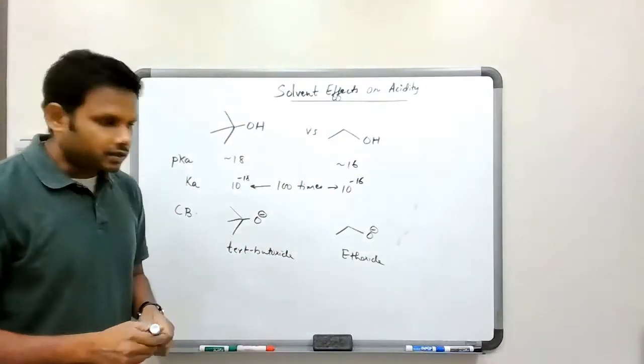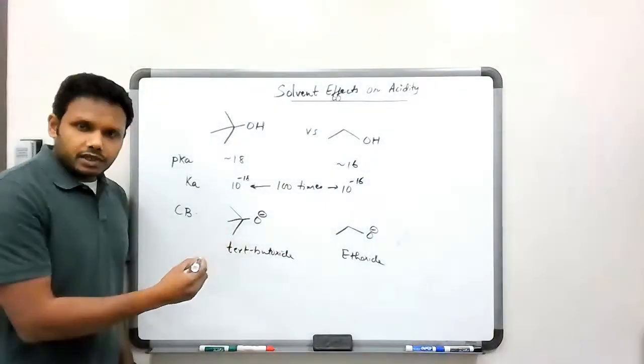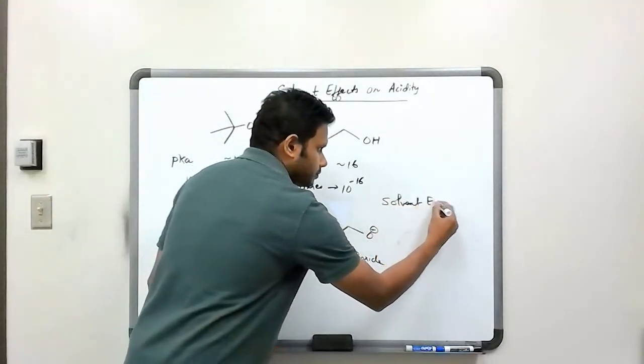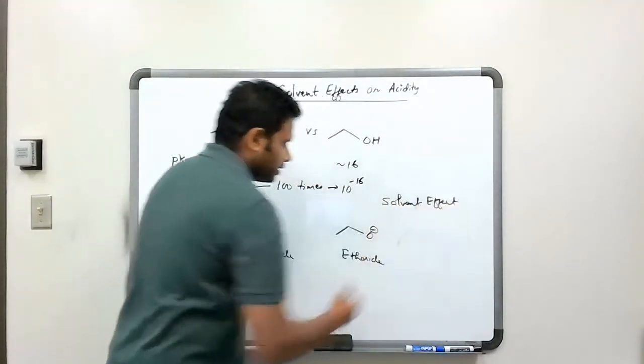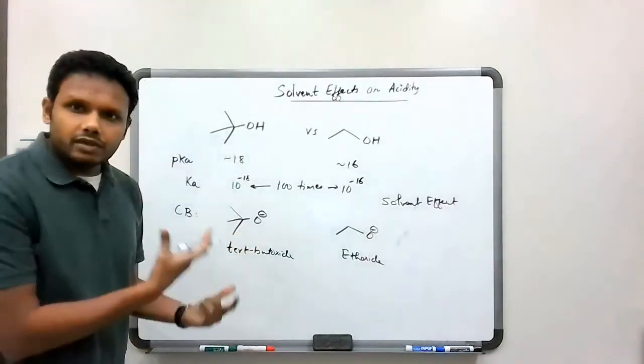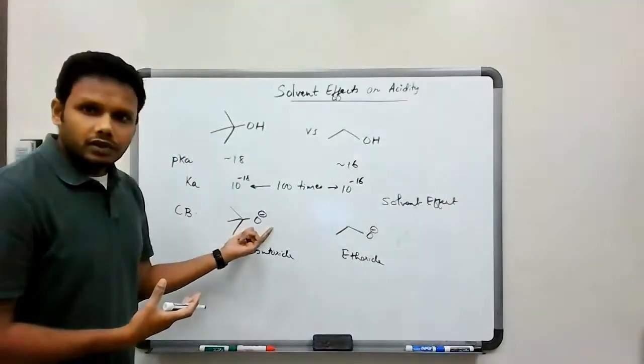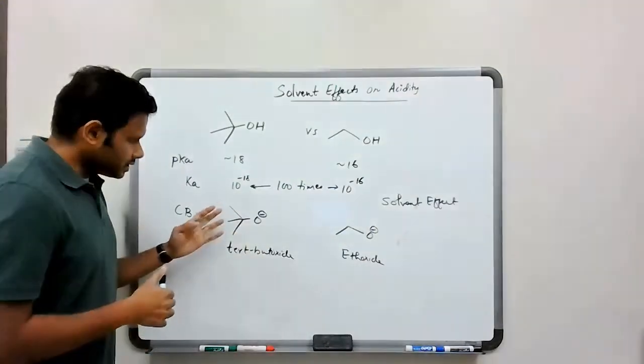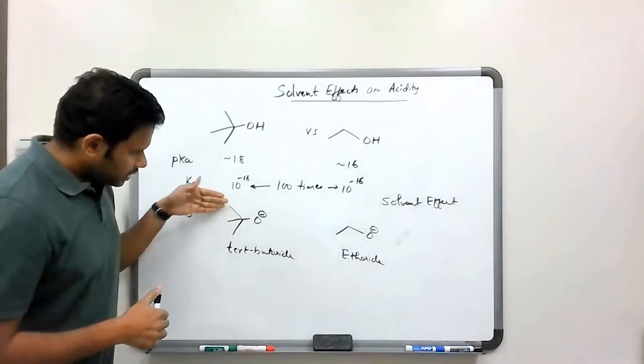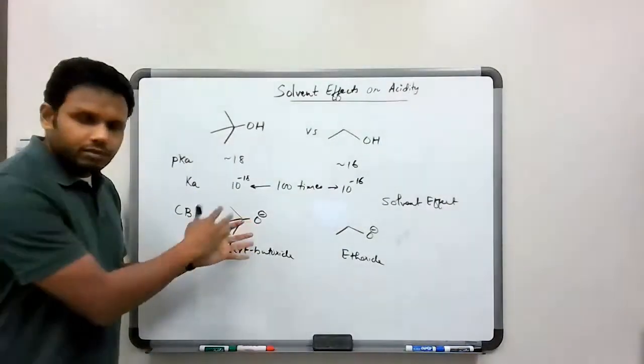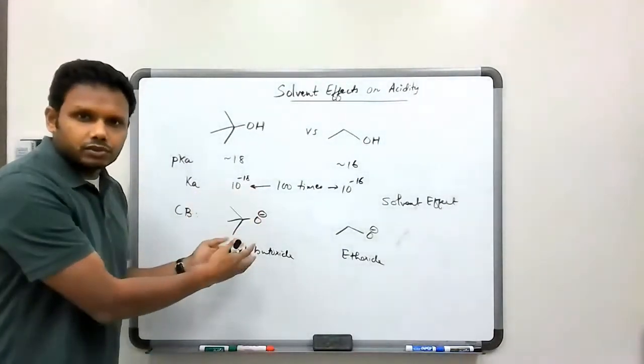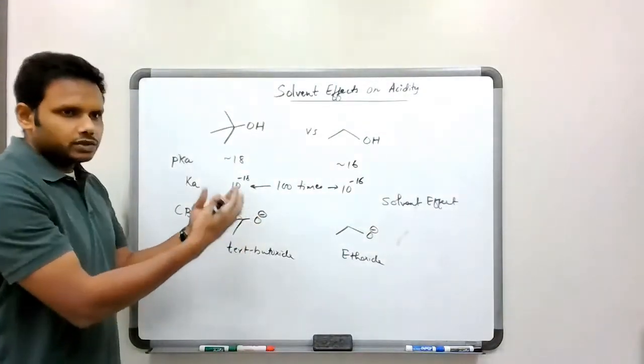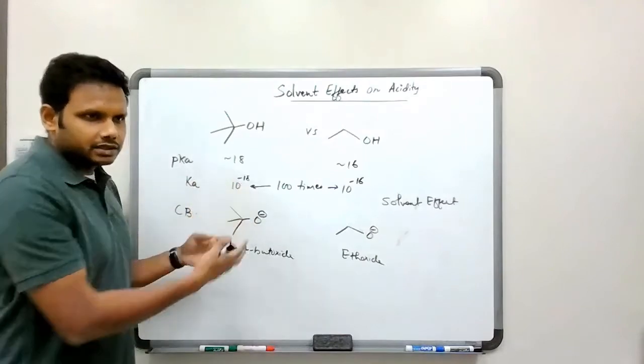That is one way you could explain this. But a better explanation is actually the solvent effect. And this has to do with the stabilization of this O-, because in the other case with the inductive effects, we are saying that electron density gets donated to that oxygen, so it becomes more unstable. So if it is more unstable, then it would like to accept the proton, which means it is less acidic.